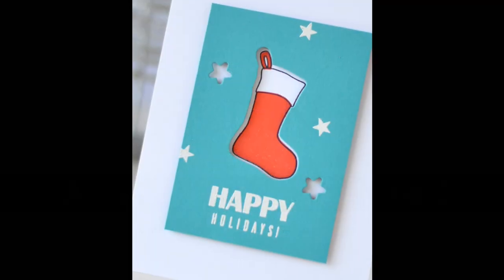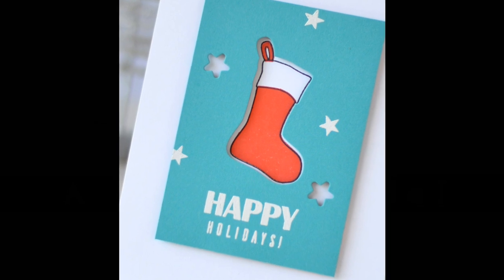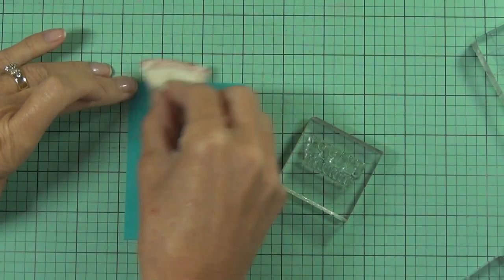Hi it's Therese and I'm here for Altenew and I have a negative die-cut technique to share with you today. I'm using the Christmas stockings stamp set which is a layering stockings set and I'm starting off by prepping my piece of cardstock.